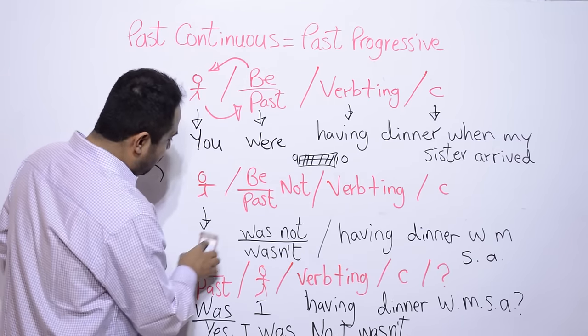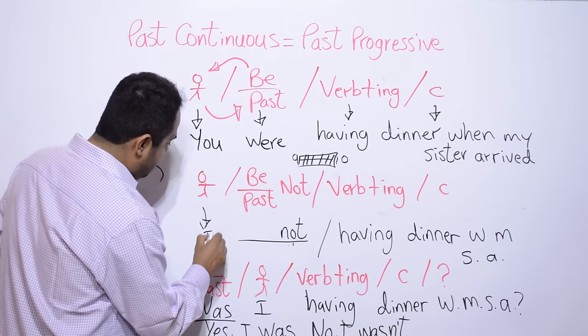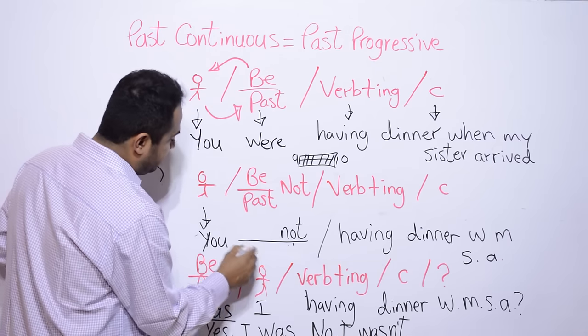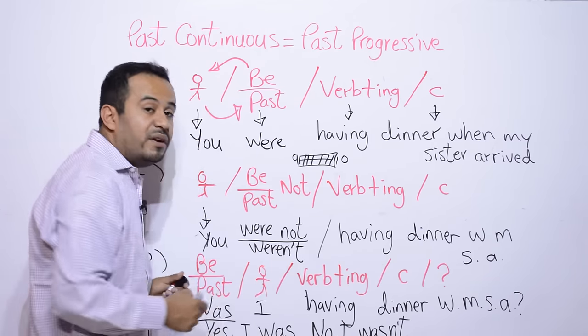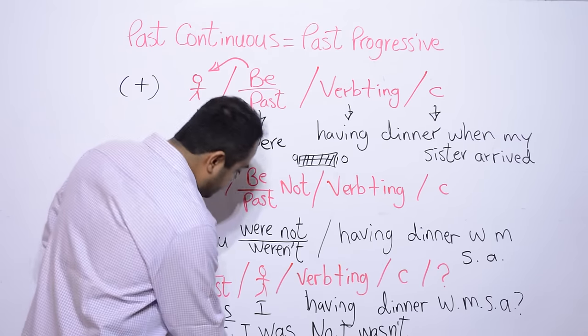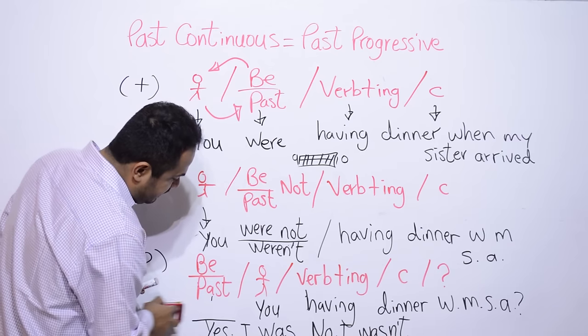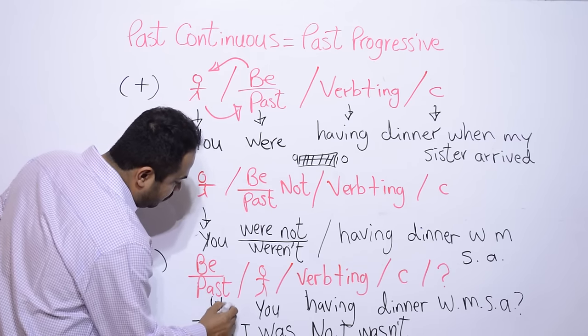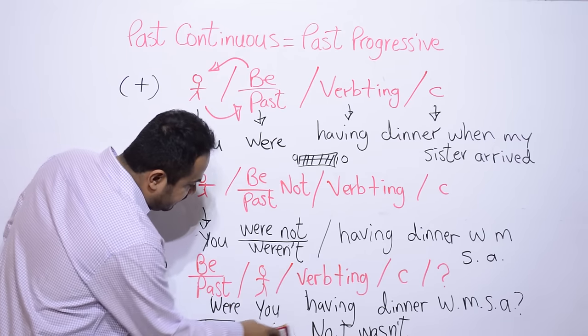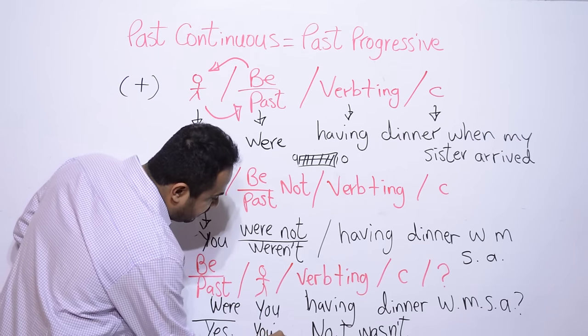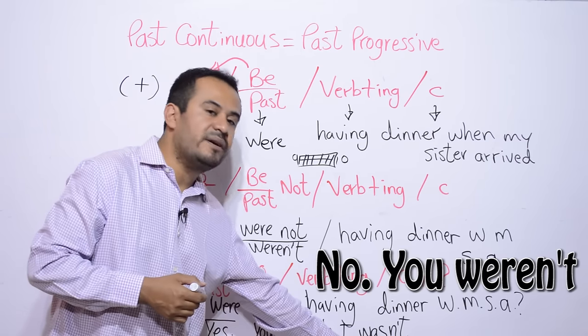Aquí igual borramos y aquí nos quedaría. Perdón. Y aquí nos quedaría you were not o de la forma contraída weren't. En la pregunta, en la pregunta borramos el sujeto. Ponemos you. Y aquí la pregunta va a abrirse con were. Were you having dinner when my sister arrived? Yes. Y aquí nos quedaría you were. Yes, you were. No. Y otra vez aquí you weren't o were not. Ok.